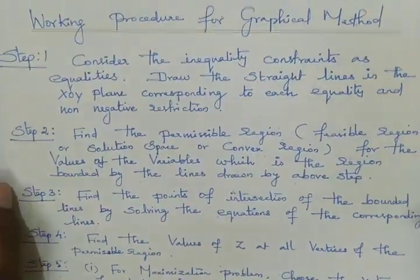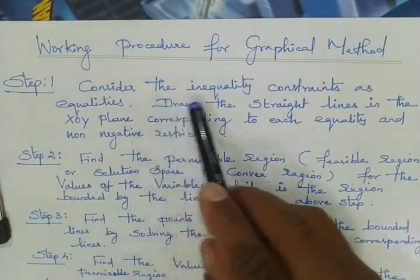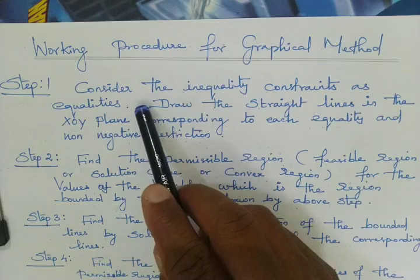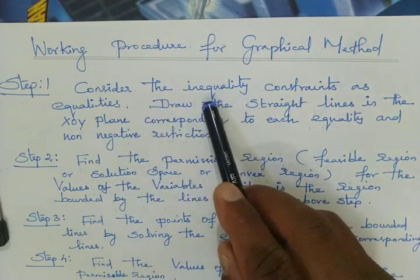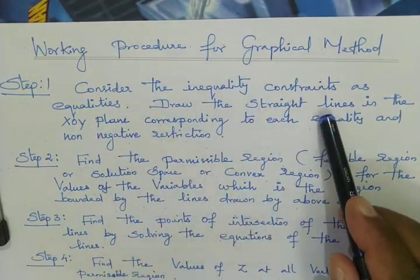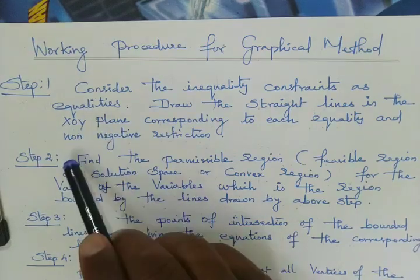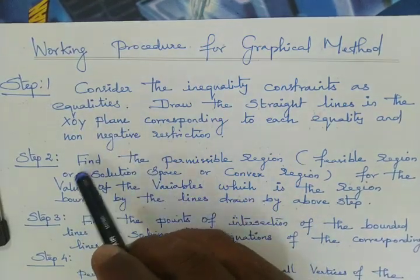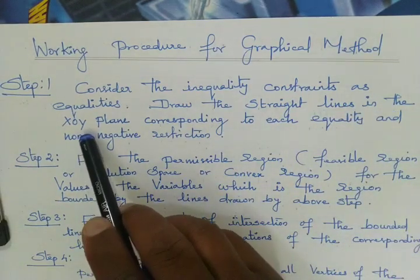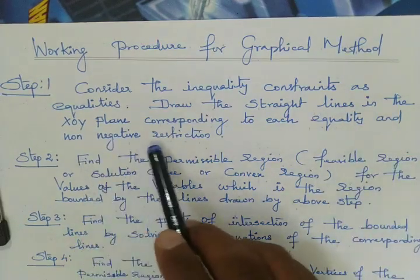Now, the working procedure — the steps involved in the graphical method. Step one: consider the inequality constraints as equalities. That is, the constraints may come as less than or equal, or greater than or equal — whatever form they come in, you convert them to equalities. Then draw straight lines in the X-O-Y plane, which indicates the first quadrant. Because all variables involved must be non-negative in LPP, we consider only the first quadrant of the graph, drawing lines corresponding to each equality and non-negative restriction.